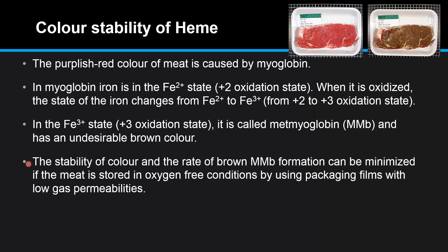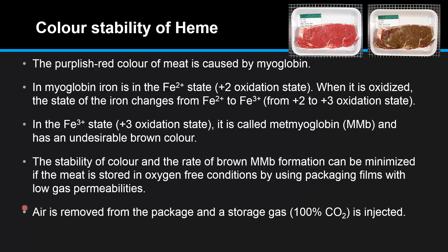The stability of color and the rate of brown metmyoglobin formation can be minimized if the meat is stored in oxygen-free conditions by using packaging films with low gas permeabilities. Air is removed from the package and a storage gas which is 100% CO₂ is injected.